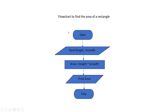This is an example flowchart to find the area of a rectangle. Start, then read length and breadth — this is an input operation so we put it in the parallelogram. Next, area equals length into breadth — this is a process that happens inside the computer, so we use the rectangle. Then print area — it is an output statement, so again a parallelogram. Then stop.